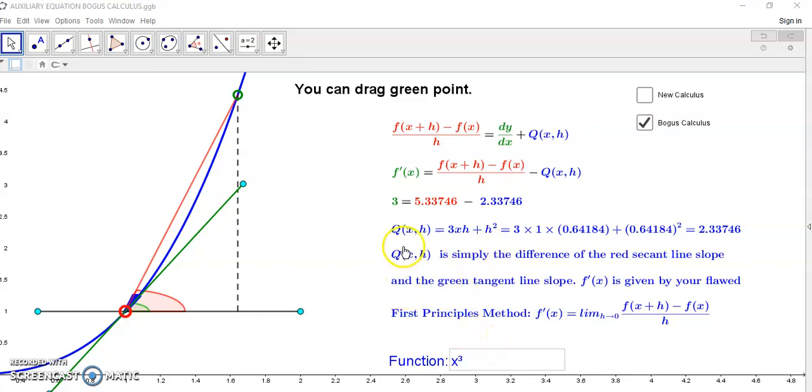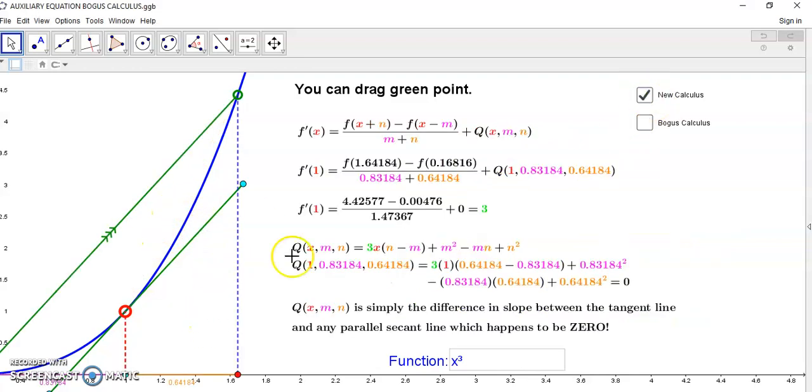So this particular equation here was found after I discovered the new calculus. And this doesn't work like the new calculus because in the new calculus, this difference here is always zero. Why? Because in the new calculus, the secant line here is never non-parallel. It's always parallel to this green line.